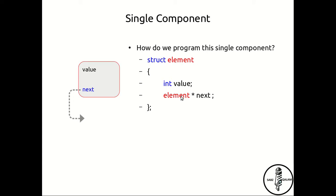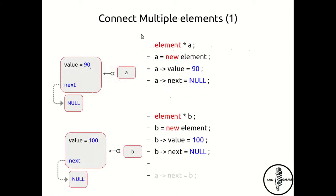This pointer can point to another element. That actually helps us point from one element to another element, and that is fundamental to our linked list definition. Now how do we combine multiple elements? Here we have an element pointer a, so a is a pointer that can point to an element.